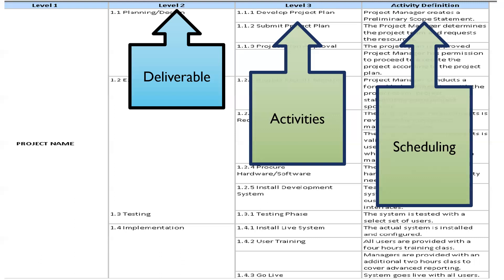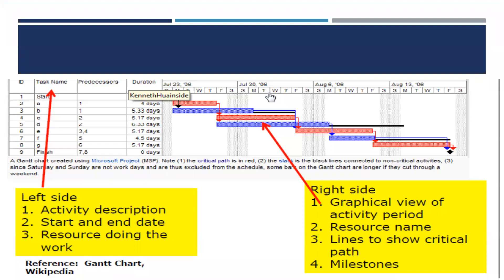Here is an example of a Gantt chart. You have the task name, predecessors — meaning the activity done before the next one — activity description, start and end date, resource, and work. On the right side is the graphical view. The time scale can be in days or weeks depending on the project. The graphical view shows the activity period, resource names, lines to show critical path, and milestones.